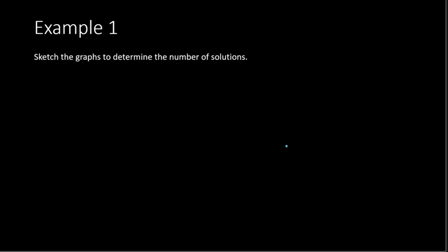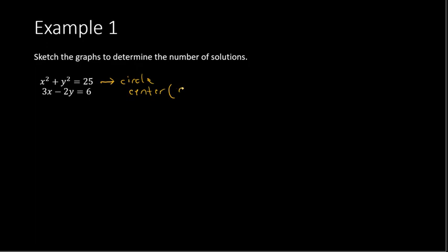Let's take a look at an example where you are told to sketch the graphs to determine the number of solutions. We have two equations: x squared plus y squared equals 25, and 3x minus 2y equals 6. The first equation is a circle with center at the origin (0, 0), since nothing is being added or subtracted with x and y.